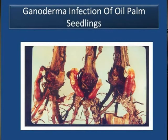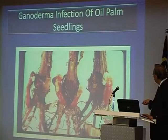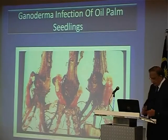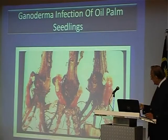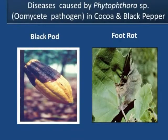Now this is Ganoderma — the Ganoderma infection of oil palm. This is how Phytophthora affects the cocoa and foot rot and pepper.